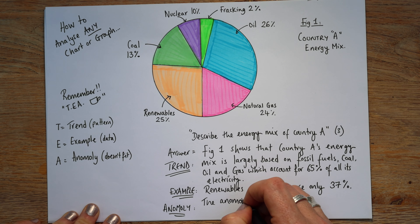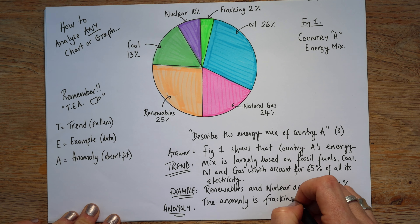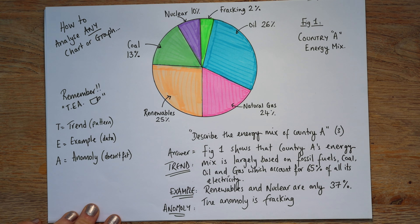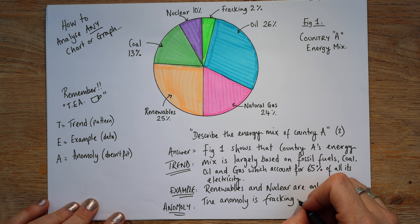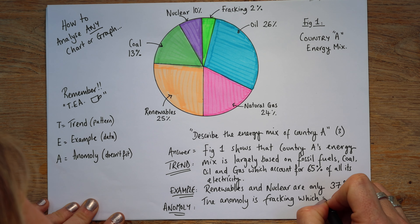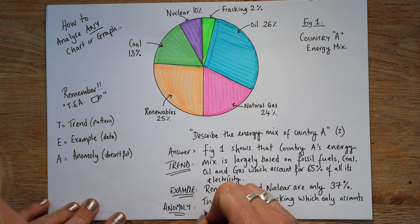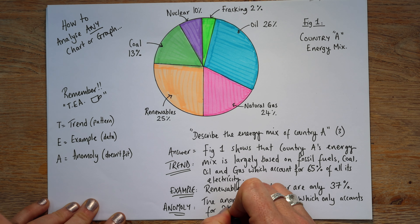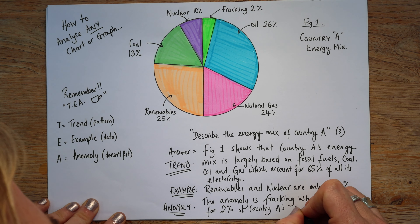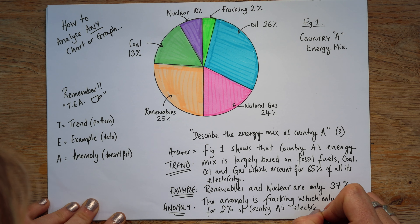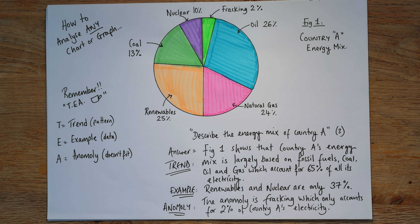Then we need to do our example. I've kind of included one already with those fossil fuels, but let's pick out a different one. So just for argument's sake, because we've already talked about those, let's say renewables and nuclear — which in geography is a renewable — are only 37%.